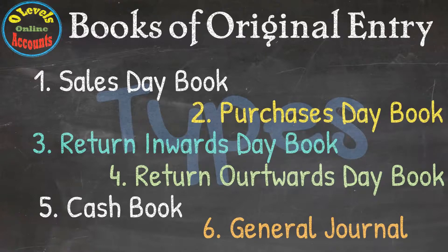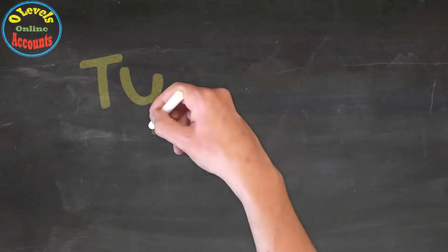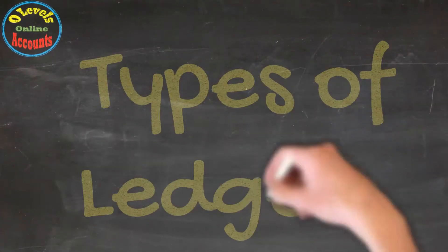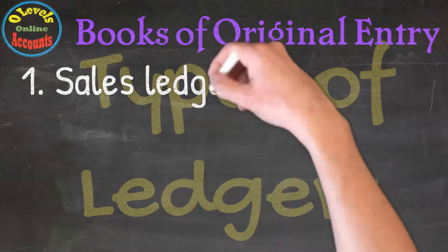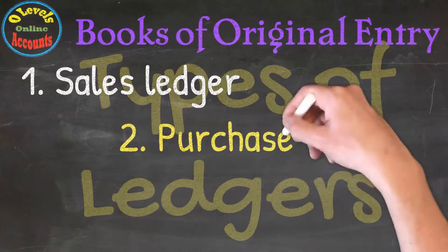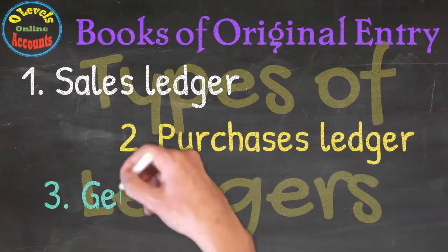Let's see the types of ledgers. There are three types of ledgers. Number one is a Sales Ledger. Number two is Purchase Ledger. And the third one is General Ledger.